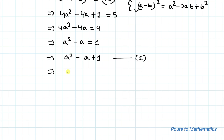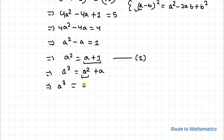Now in the next step I'll multiply both sides of the equation by a. So we get a³ equals to a² plus a. From Equation 1 we have a² equals to a plus 1. Substituting, we get a³ equals to a plus 1 plus a, which gives us a³ equals to 2a plus 1.